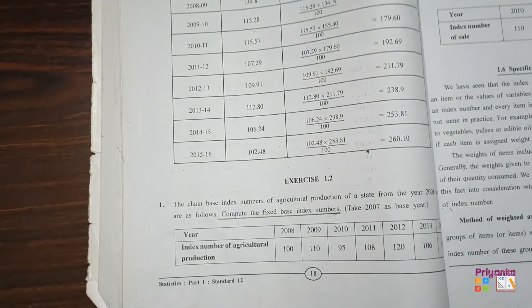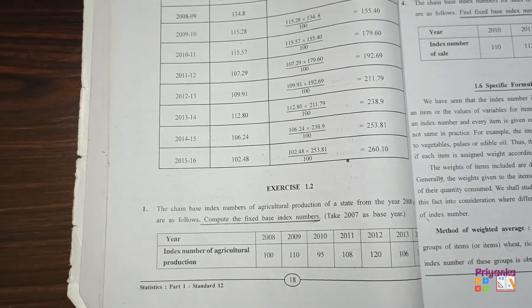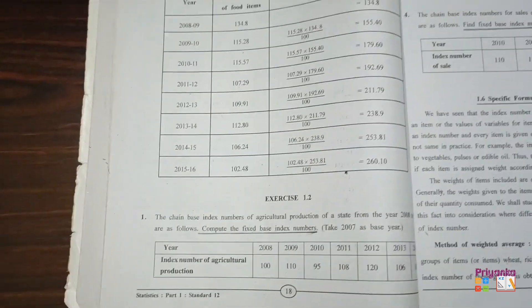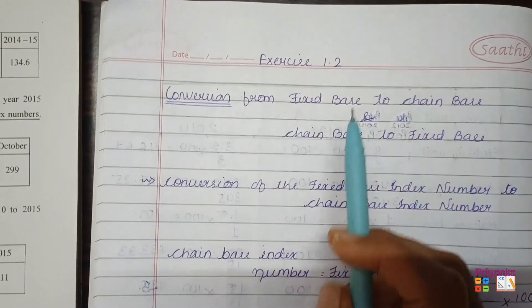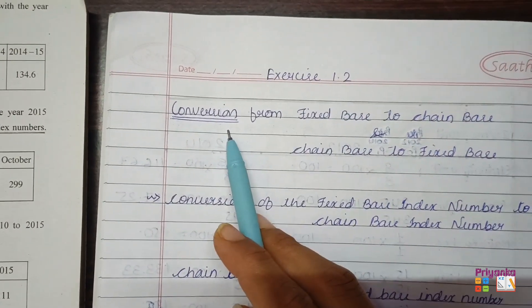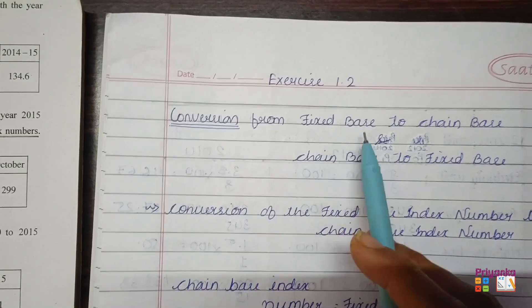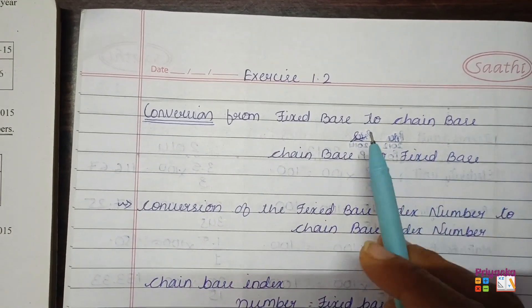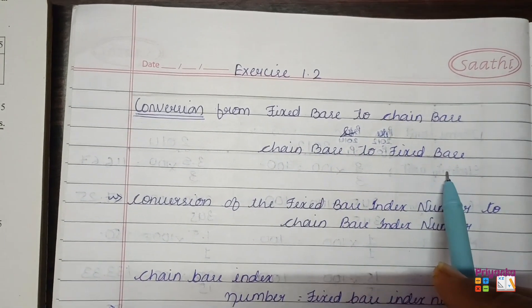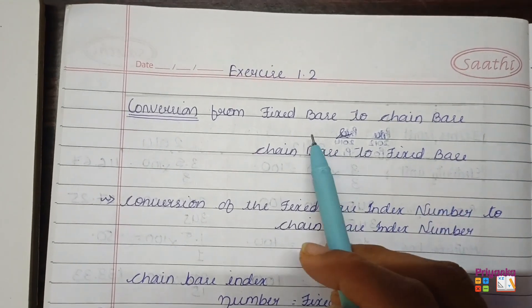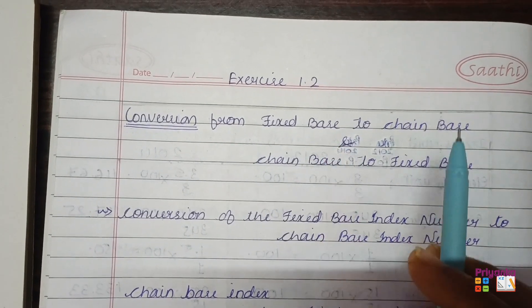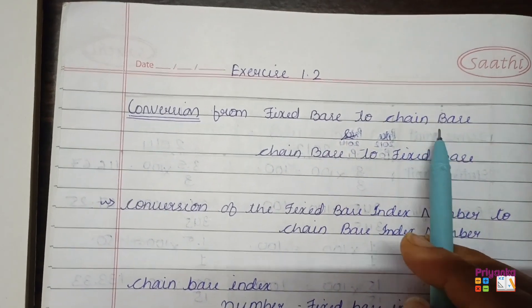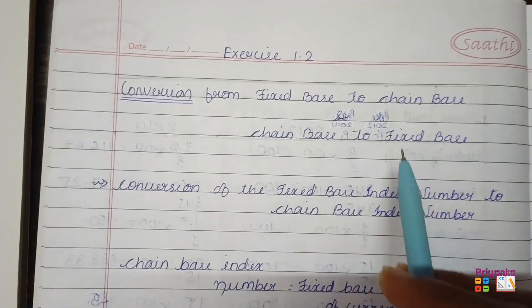Statistics Chapter 1, Exercise 1.2, which is given on page number 18 in your textbook. Before we start Exercise 1.2, we will learn that the whole exercise depends on conversion — conversion from fixed base to chain base and chain base to fixed base. The question will be given in either fixed base or chain base, and that has to be converted into the other method, which you will understand more when we start with the solution.